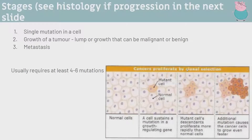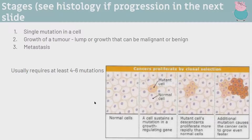These are the stages of mutations leading to cancer development. Usually there's a single mutation in a cell, then through clonal selection that cell has an advantage in growing quickly. You'll have growth of a tumor - a lump or growth that can be malignant or benign - and eventually that will lead to metastasis, which is the invasion of cancer to other parts of the body. It usually requires at least four to six mutations. Because you have overly rapid growth through the cell cycle, you're leading to even more mutations, so the cancer becomes even worse.